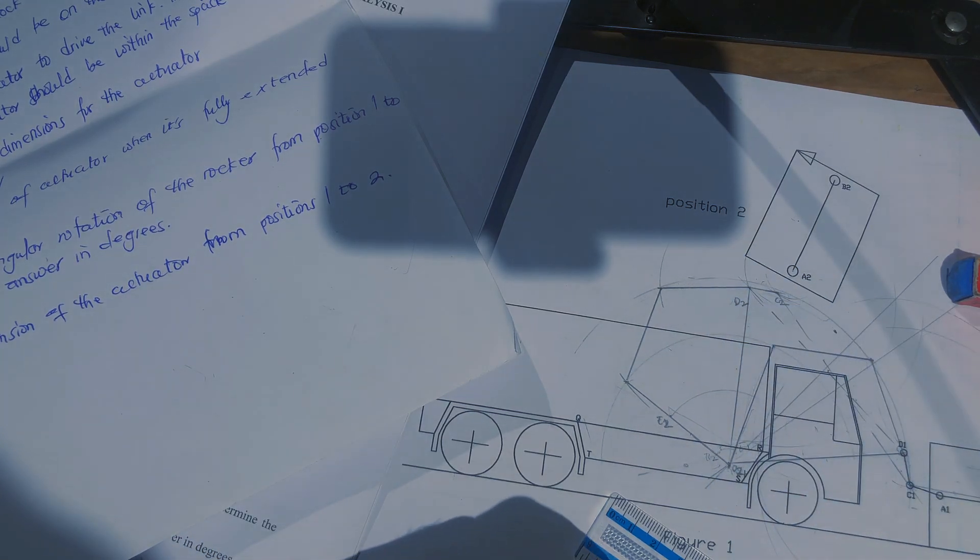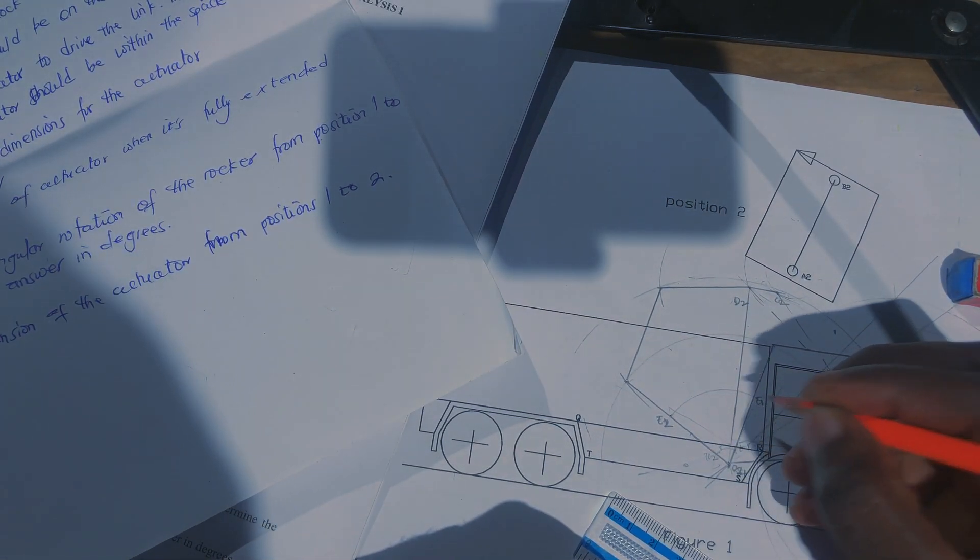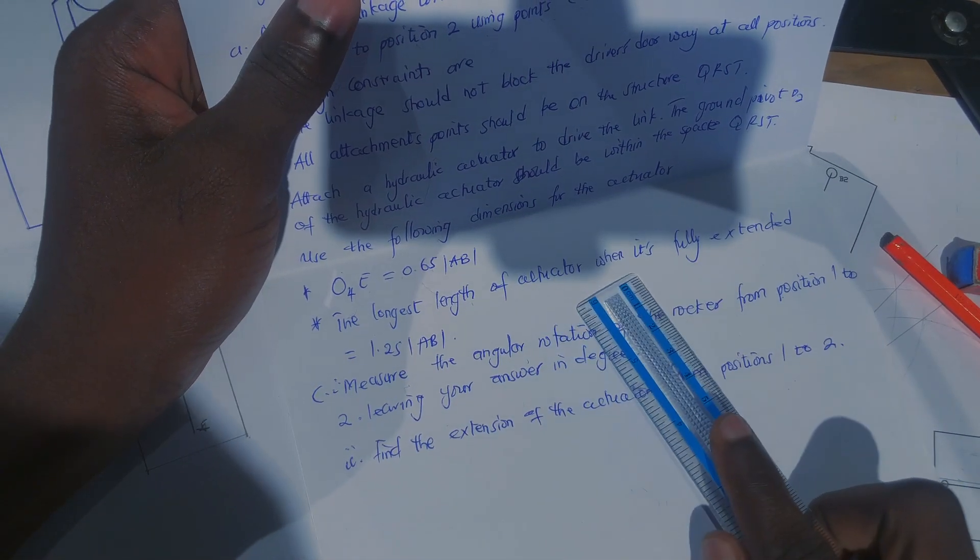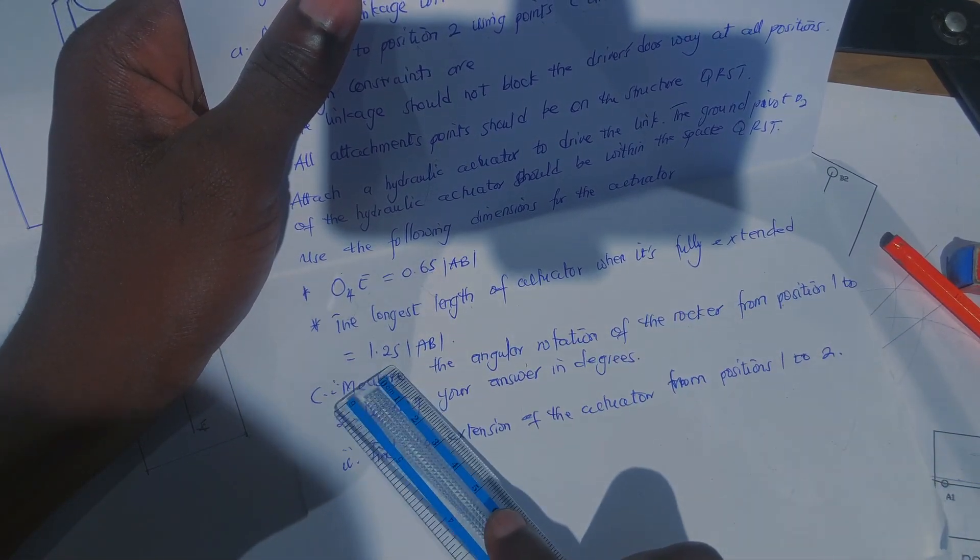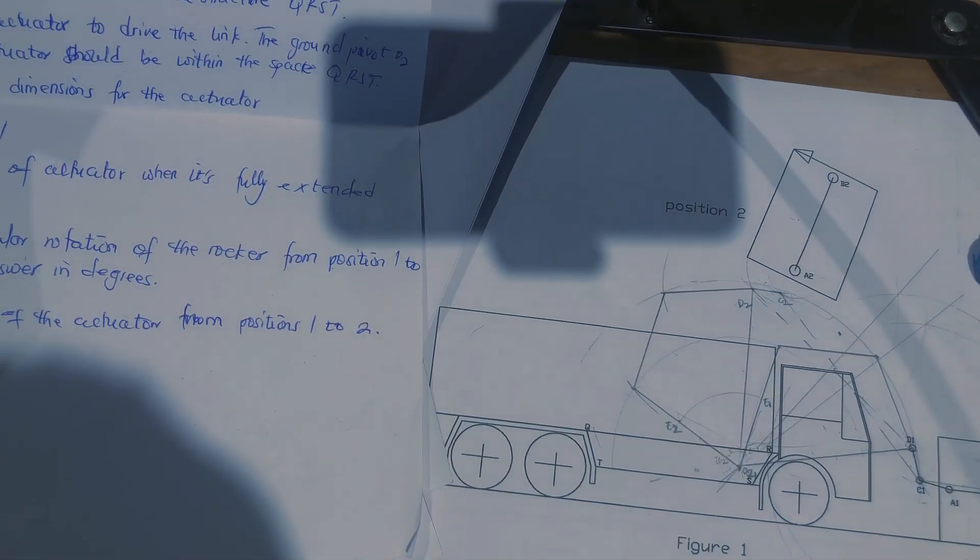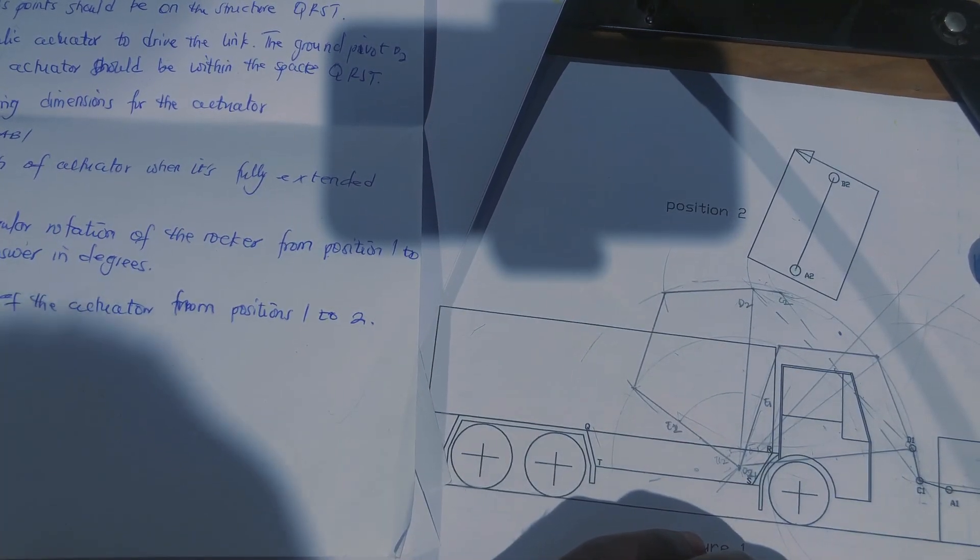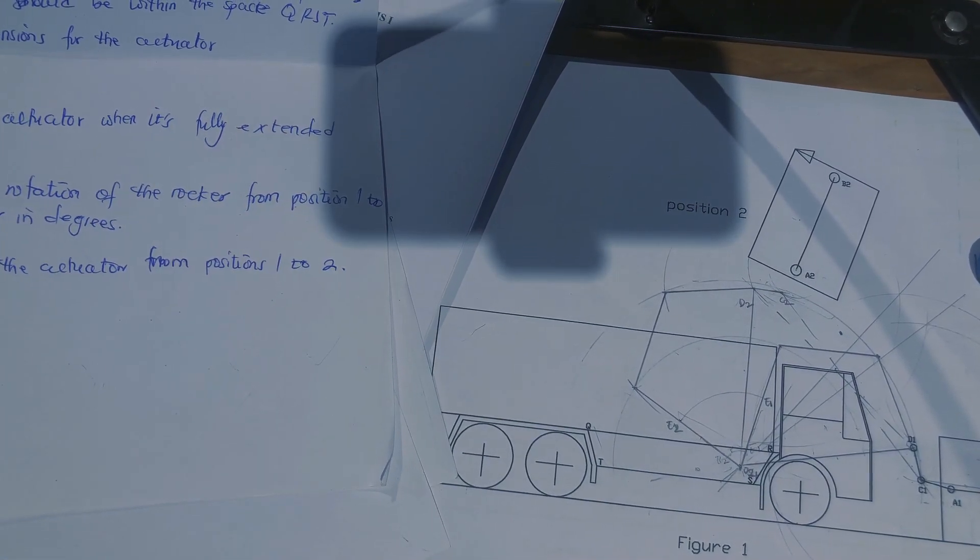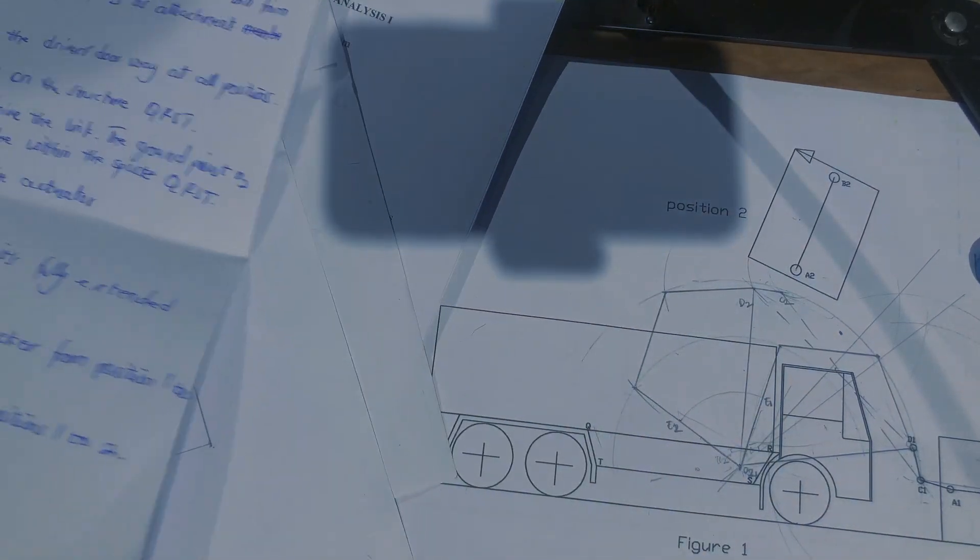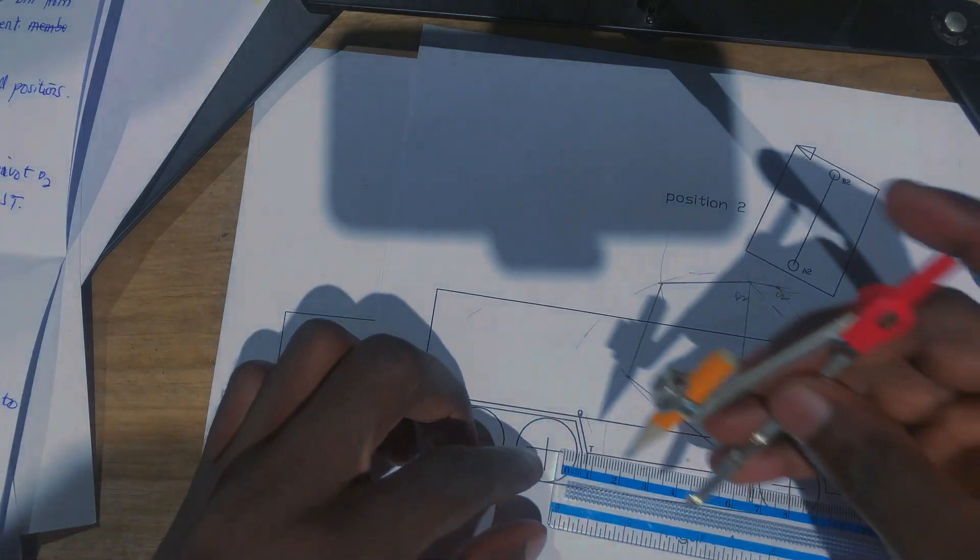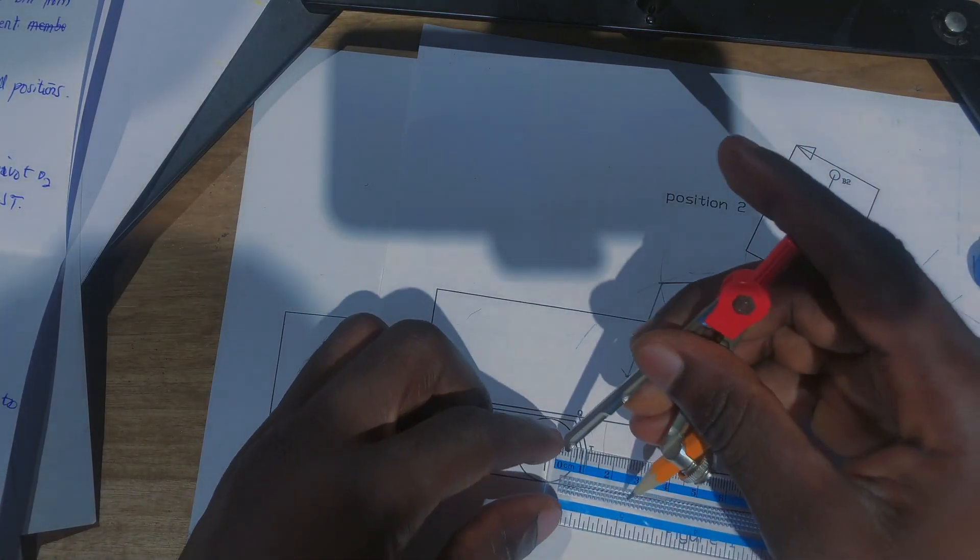So you've got your position two, E1 here, E2 here. Now the next one is that the longest length of the actuator when fully extended should be 1.25 times AB. So 1.25 times four, that'll be five. So you measure five centimeters on the straight edge.